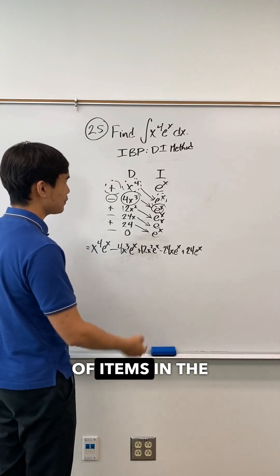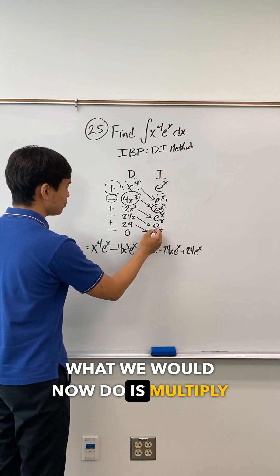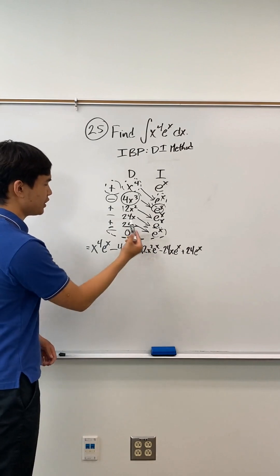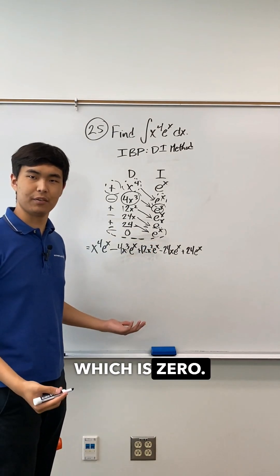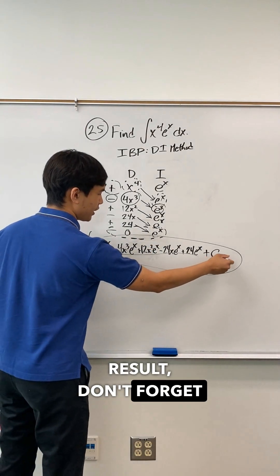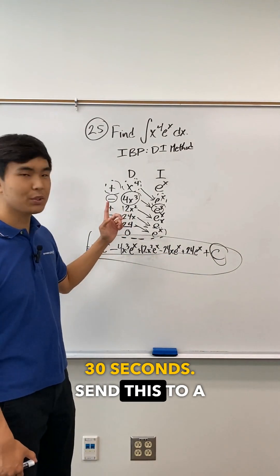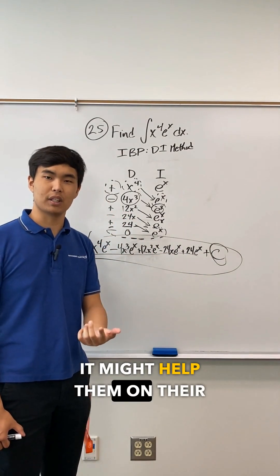Now technically, when we run out of items in the I column, what we would now do is multiply all these together and add their integral. But since we have zero times e to the x, it would just be integrating zero, which is zero. So we get the same result. Don't forget your plus C, and that's the problem solved in less than 30 seconds. Send this to a friend who's a slow test taker. It might help them on the calc exam.